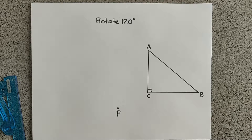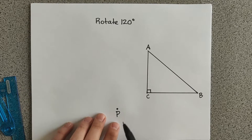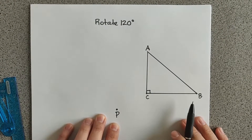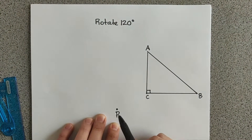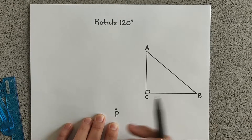What's up you freaking geniuses? In this video I'm going to teach you how to draw a rotation about a point. I'm going to go over two examples, but we're going to start with the easier one. As you can see here we have a right triangle, and we're going to rotate it 120 degrees about point P right here.